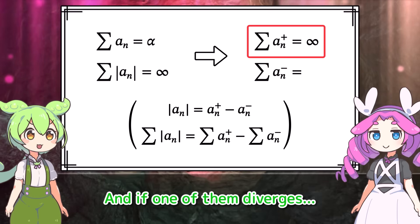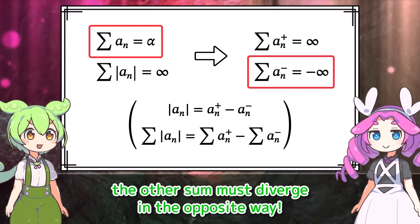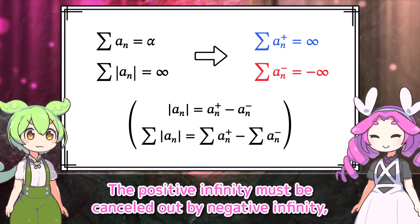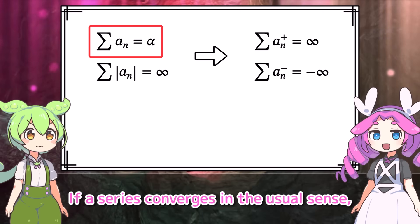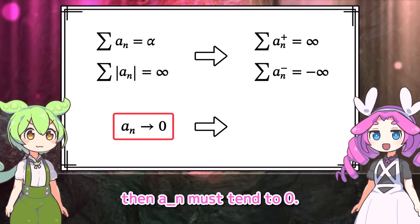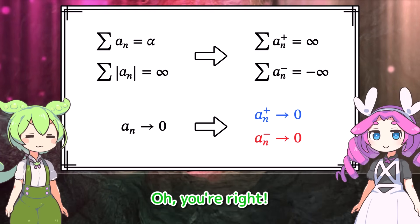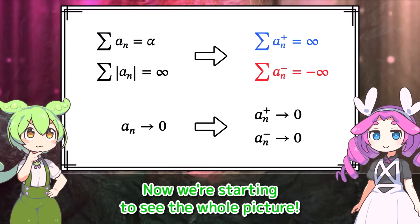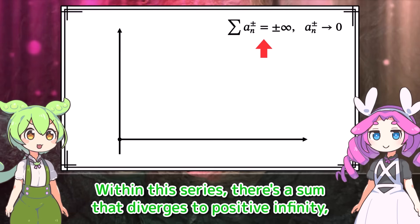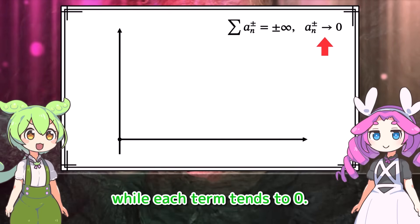If one of them diverges, in order for the series to still converge in the usual sense, the other sum must diverge in the opposite way — positive infinity must be cancelled out by negative infinity. Also, if a series converges in the usual sense, a_n must tend to zero, so both a_n-plus and a_n-minus must also tend to zero. The fact that each sum diverges means there must be infinitely many positive and negative terms. Within this series, there's a sum that diverges to positive infinity and another that diverges to negative infinity, while each term tends to zero.